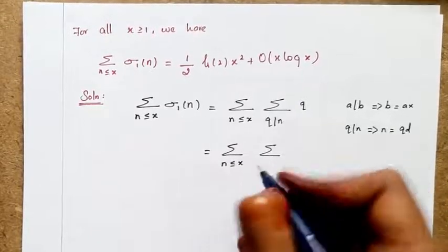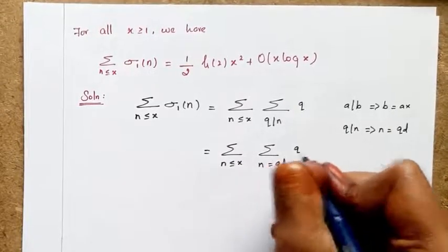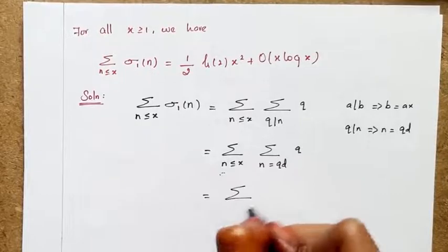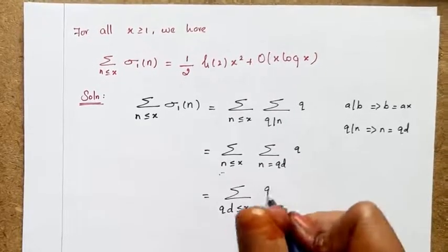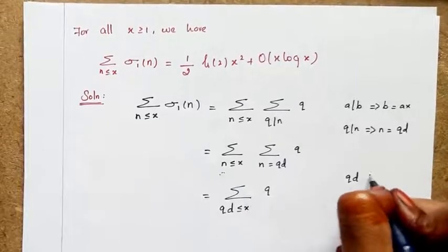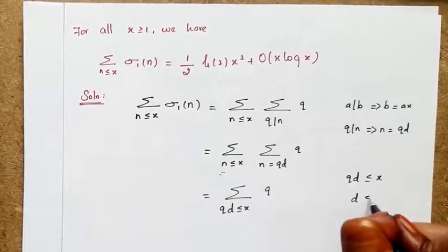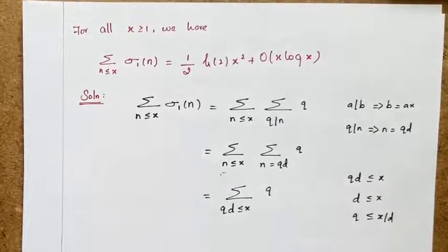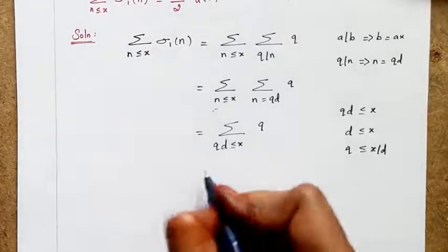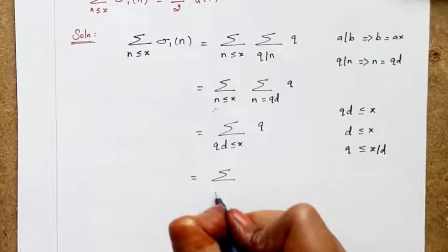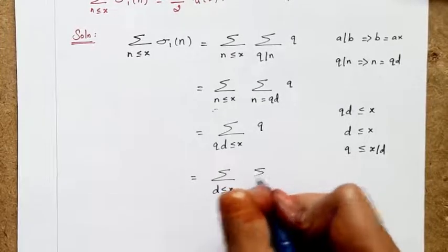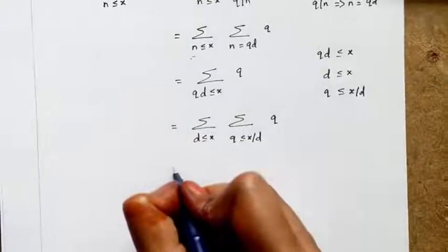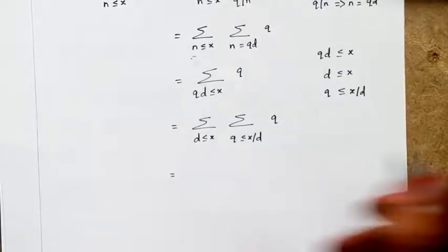I replace n by qd to get sum over qd ≤ x of q. Since qd ≤ x, clearly d ≤ x and we can write q ≤ x/d. So now I split this summation into two terms: sum over d ≤ x of sum over q ≤ x/d of q. Now I apply the Euler asymptotic formulae.